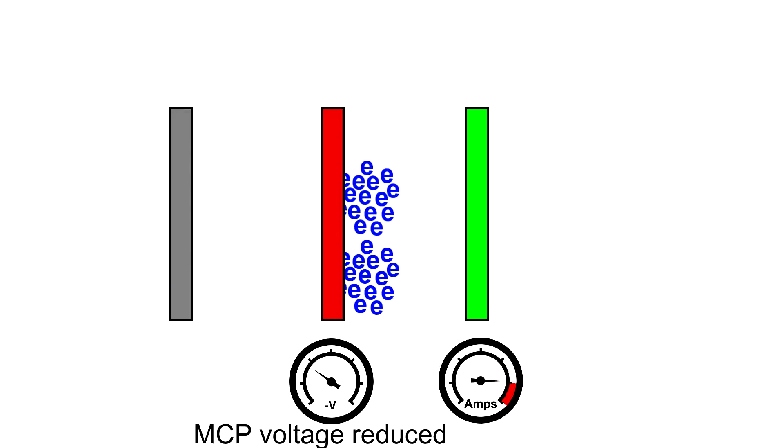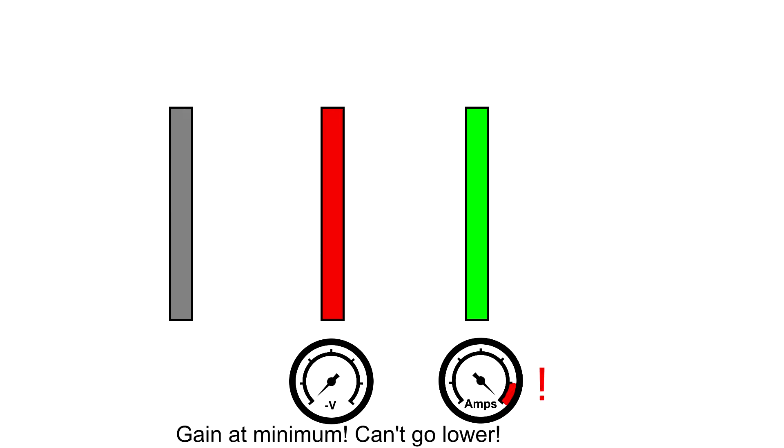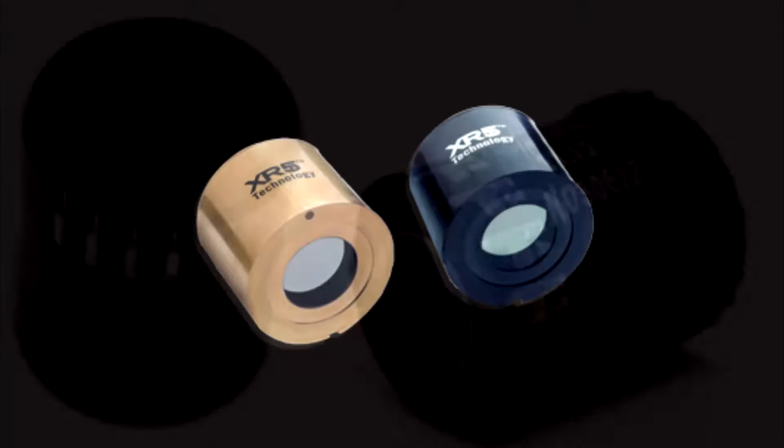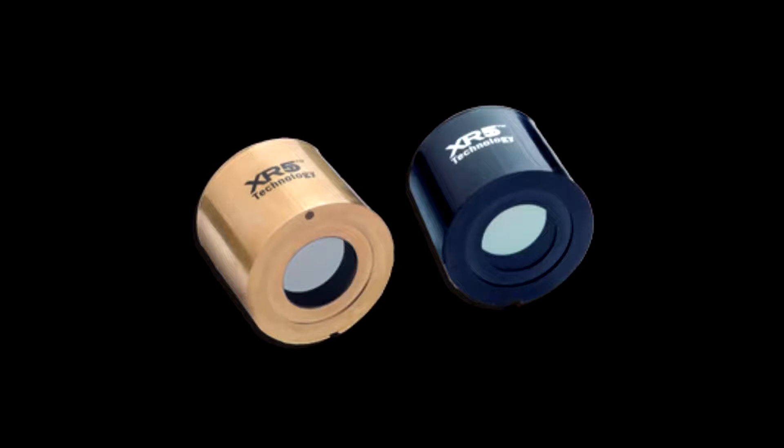If light levels continue to increase, then bright source protection will kick in. Bright source protection lowers the voltage to the photocathode, and hence reduces the amount of electrons that get released into the tube in the first place. Bright source protection is also a mechanism that can be found on even the earliest gen 2 tubes. And they also allow modern gen 2 plus tubes to be incredibly resilient to high light exposure.